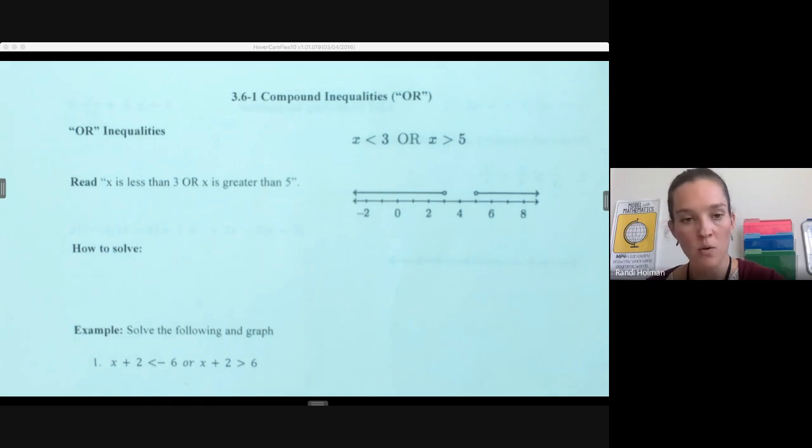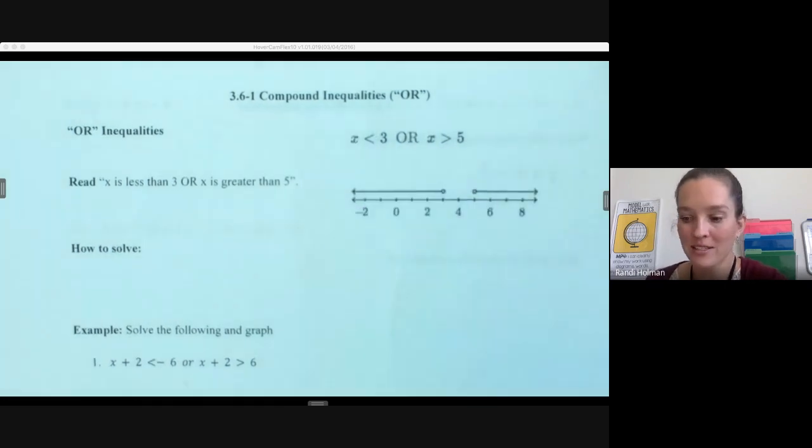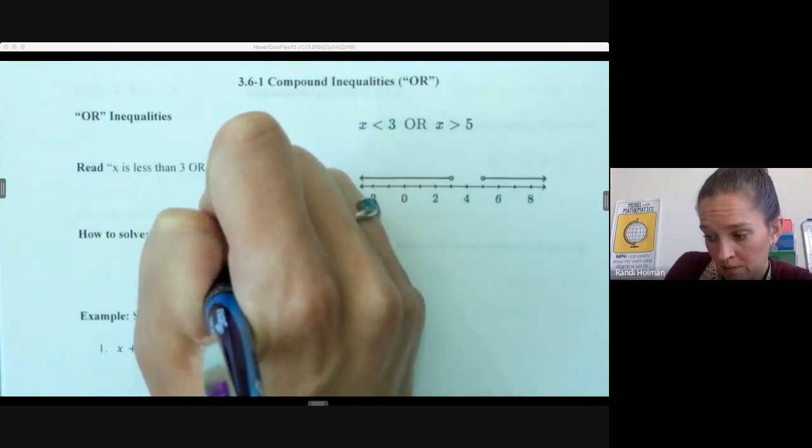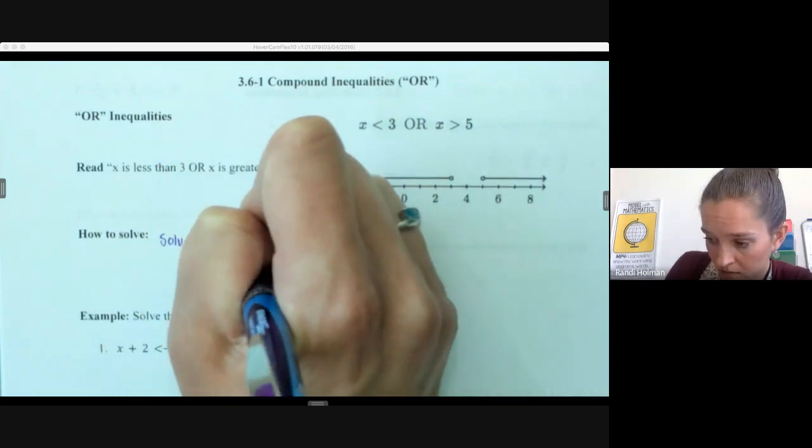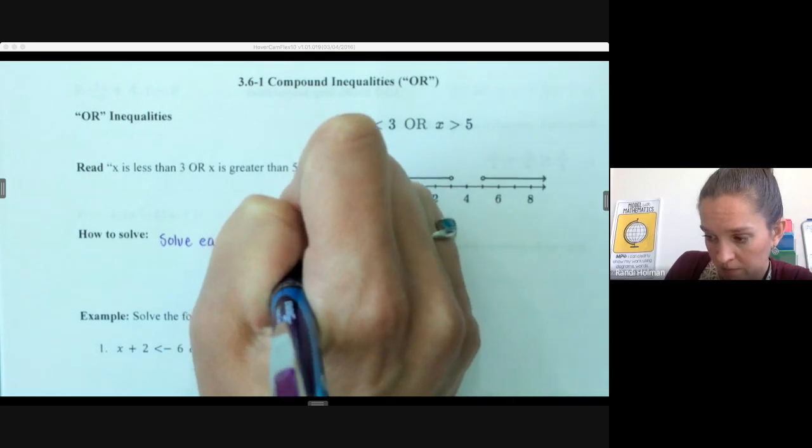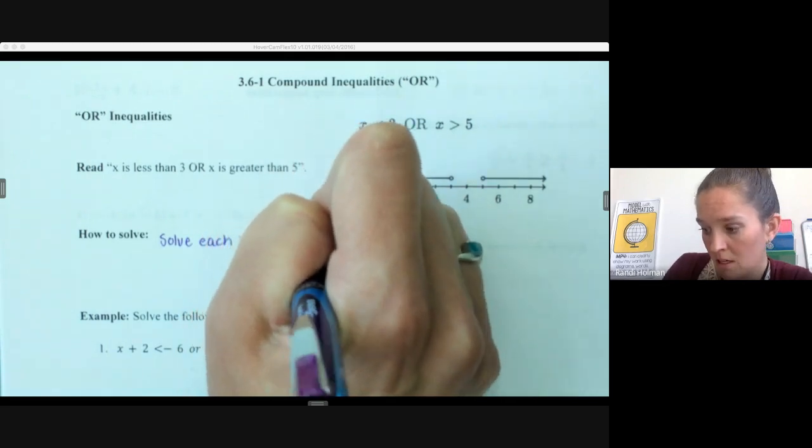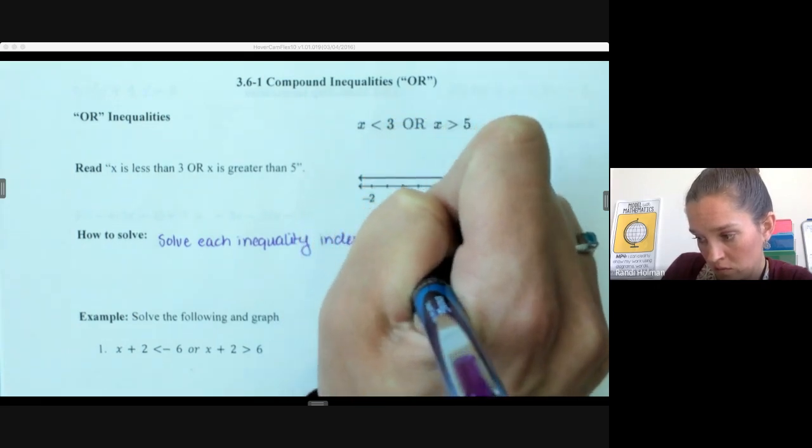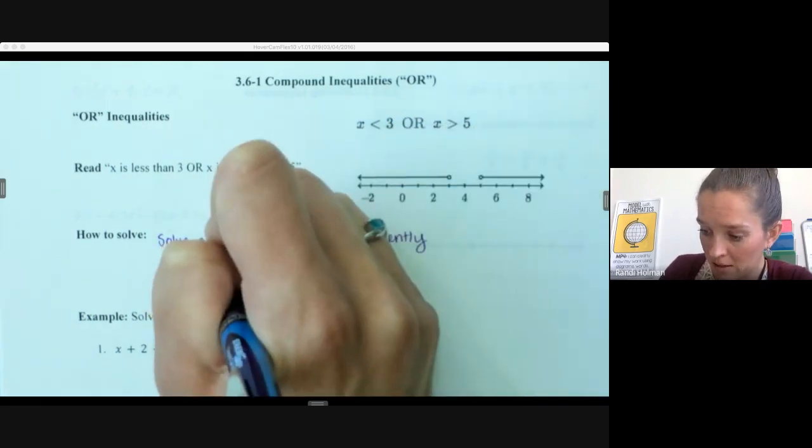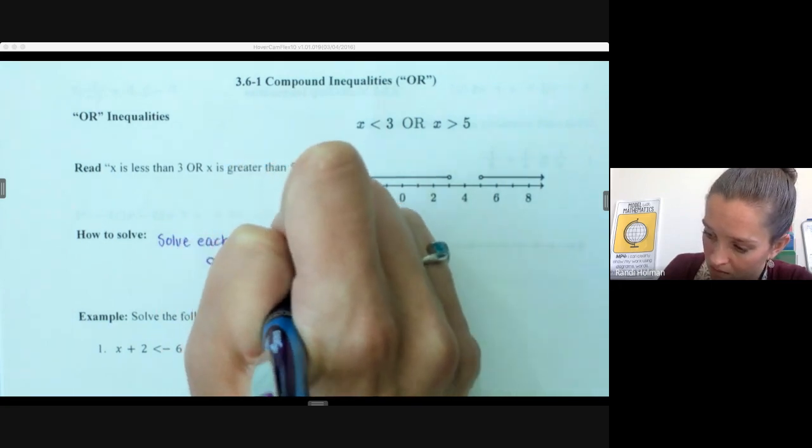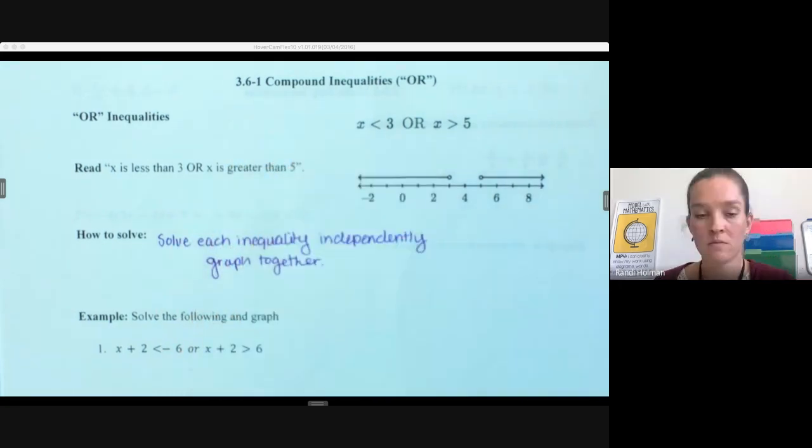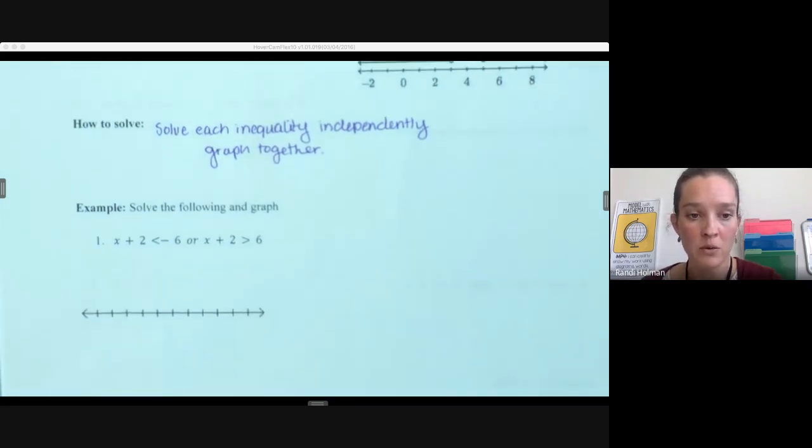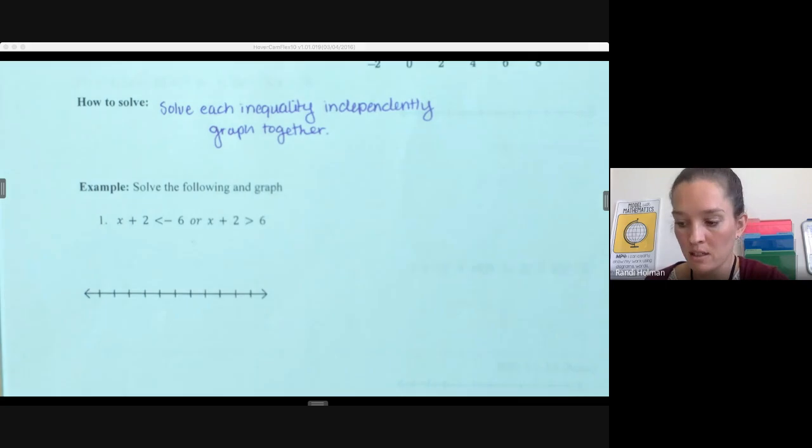So how do we solve these inequalities if they're not already solved for us? We're just going to solve each inequality independently, then graph together. And so we're going to look at each of these inequalities individually and then put their graphs together on the same graph.